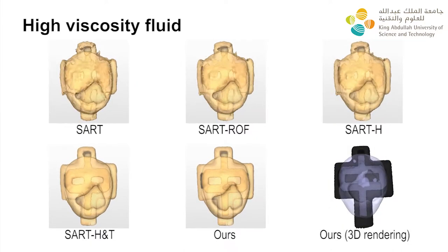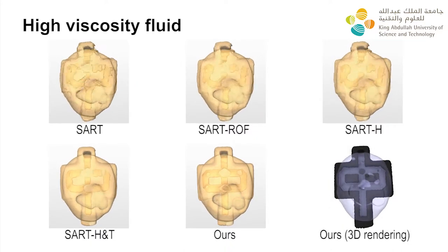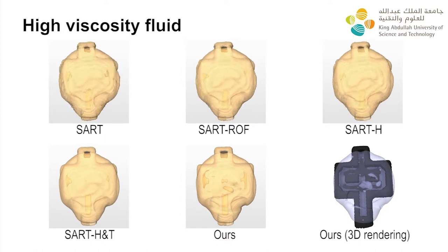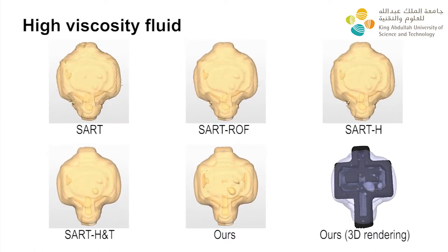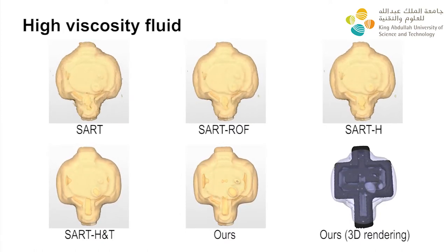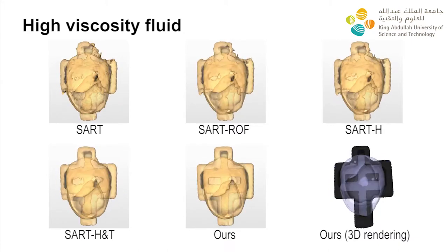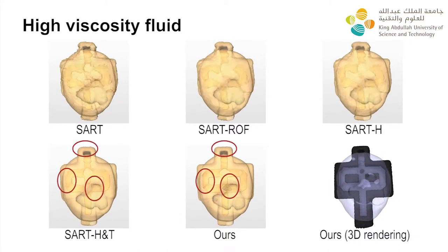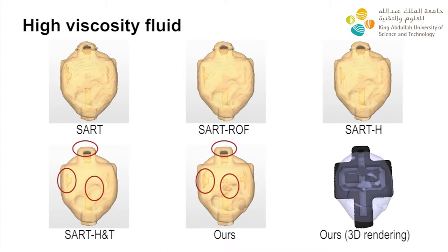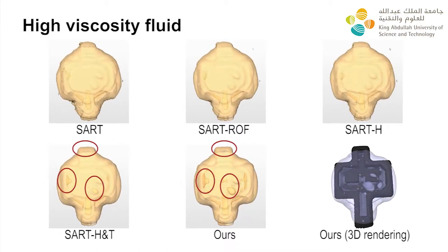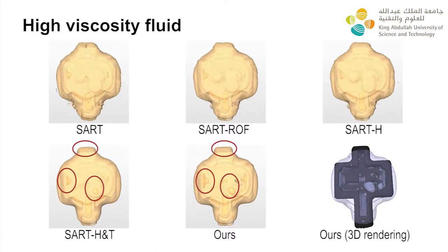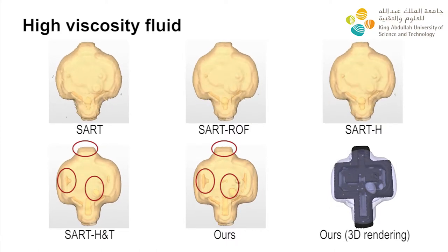The first row corresponds to both basic and spatially regularized SART. We can notice temporal incoherence between successive time frames. This is solved by adding temporal smoothness in the approach, SART HNT. Finally, by using the optical flow prior and the joint optimization framework, our method has the best results for dynamic features in the fluid, as well as for static features, highlighted here by the red ellipses.